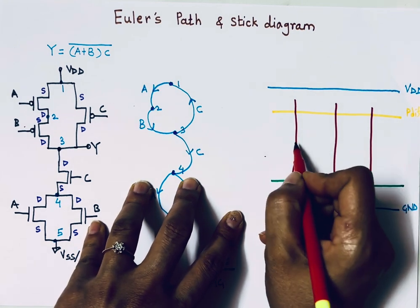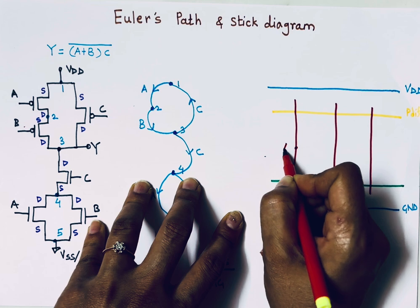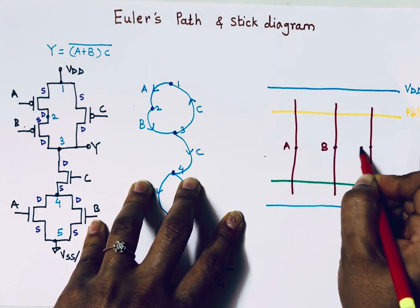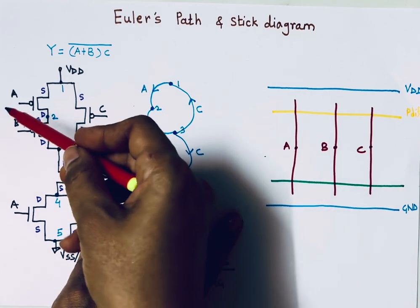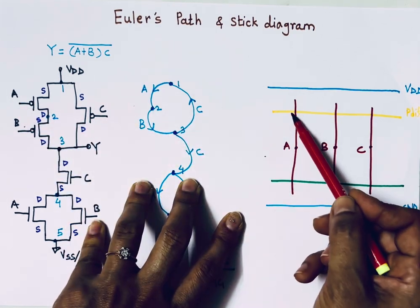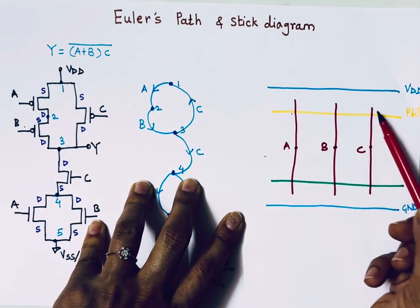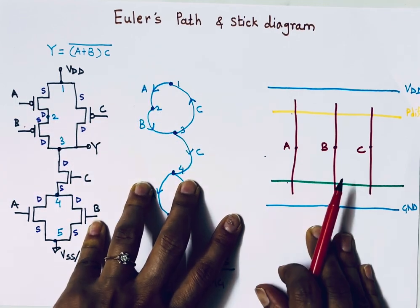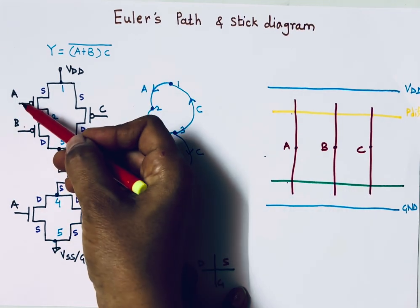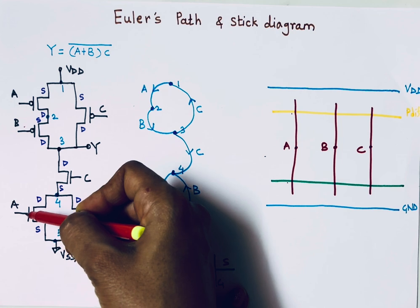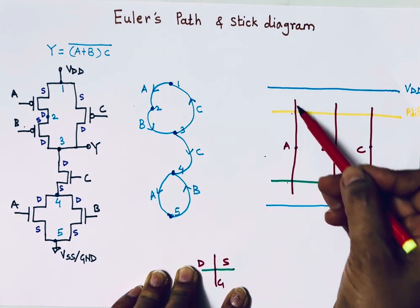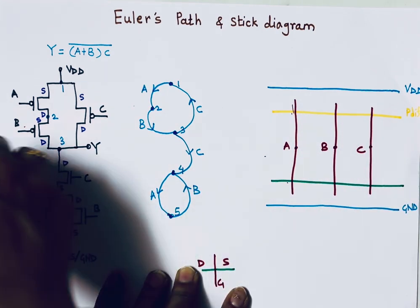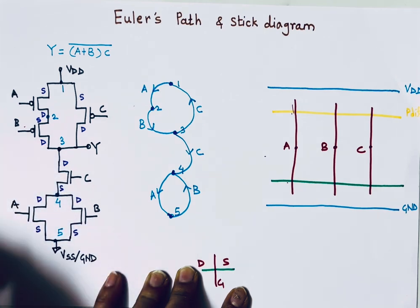So here are transistors A, B, and C for the three PMOS, and three NMOS below. The gate terminals of corresponding transistors are shorted — the same A gate connects to both the PMOS and the NMOS, same for B and C. Now let's make the remaining connections.